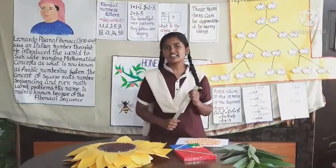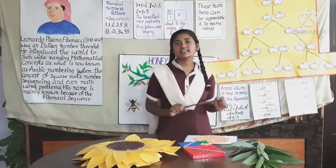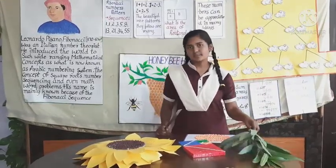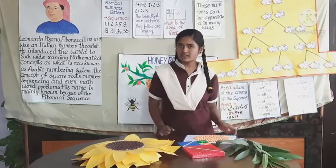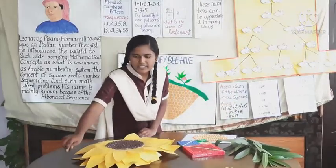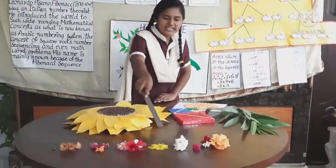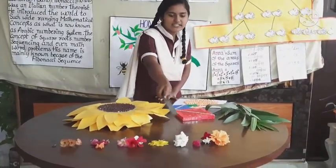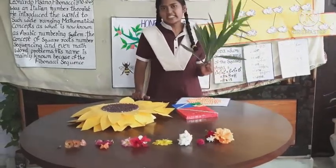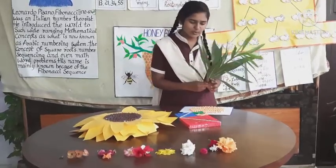Do we find the Fibonacci sequence in nature? Exactly — we find the Fibonacci sequence in nature, from the leaf arrangement in plants to the florets of flowers. See here: it has 1 petal, 2 petals, 3 petals, 5 petals, 8 petals, 13 petals, 21 petals. As I told you, the leaf arrangement in plants follows the Fibonacci sequence.